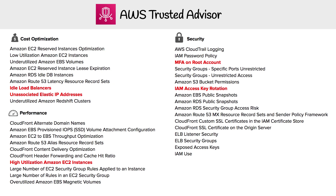For idle load balancers: if you spin up an elastic load balancer, the minimum cost per month is $15. But if you don't have any EC2 instances being balanced on it, Trusted Advisor will say, hey, this load balancer is not doing anything — maybe you should get rid of it to save some money. Another one is EIPs — elastic IP addresses. If you have an EC2 instance and you want to give it a static IP, you can reserve an EIP from AWS. But if it's not attached to an EC2 instance, it costs you money, because AWS wants you to release that IP address so someone else can use it.